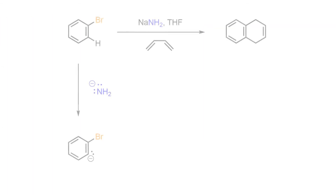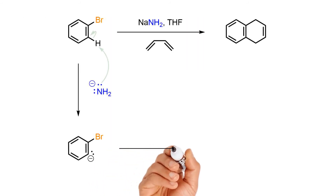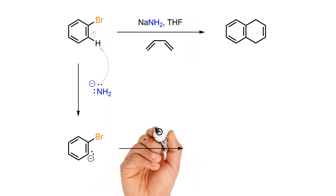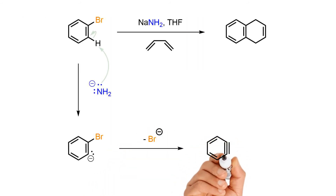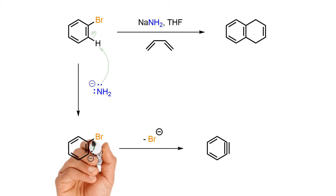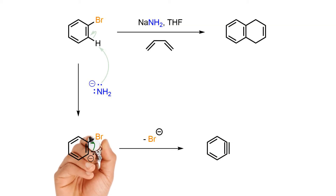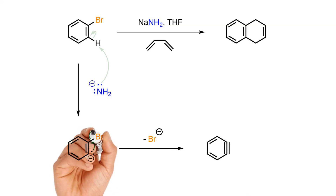The first step of the process involves the powerful base deprotonating the aryl ring beta to the halogen to produce a carbanion. The anion then collapses with loss of the halide leaving group to produce the highly strained and reactive benzyne intermediate.